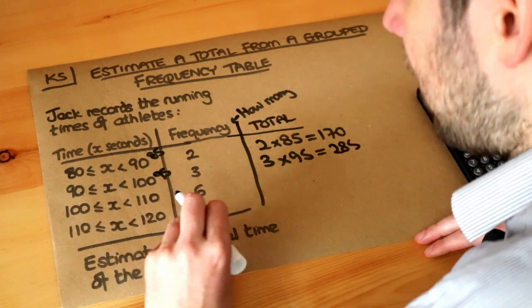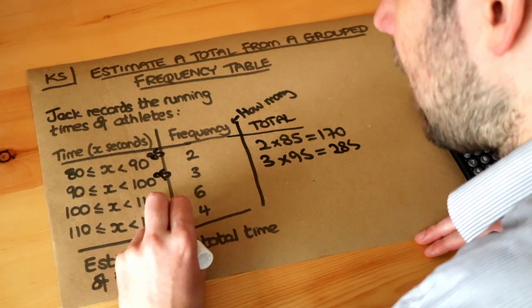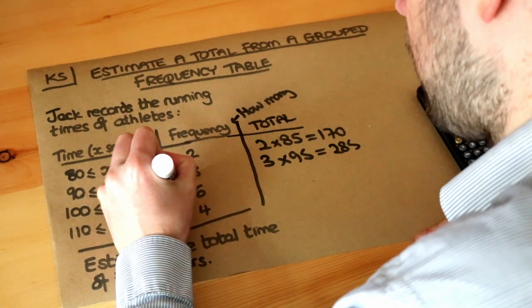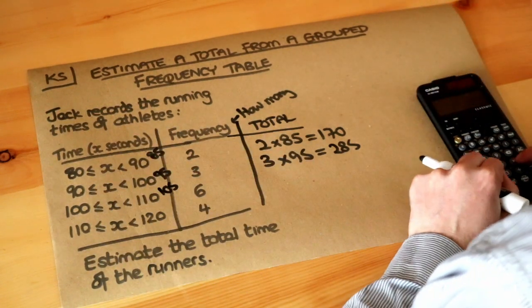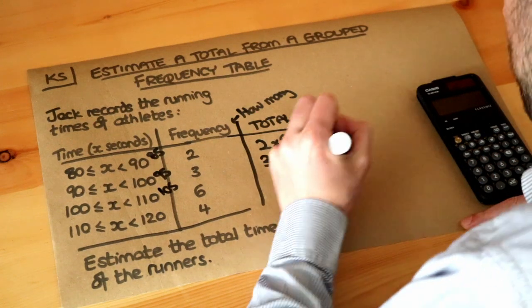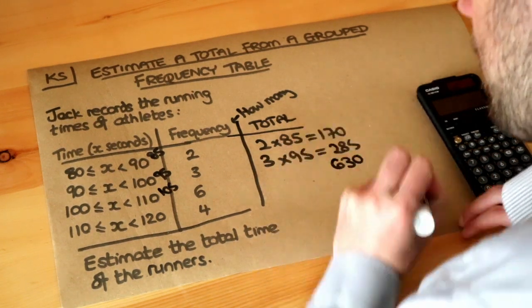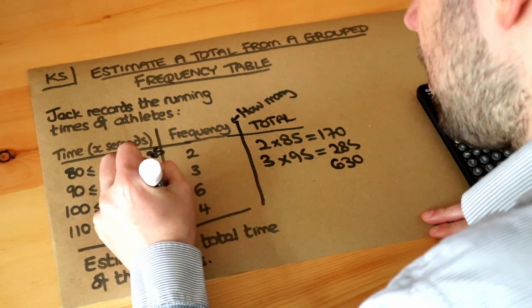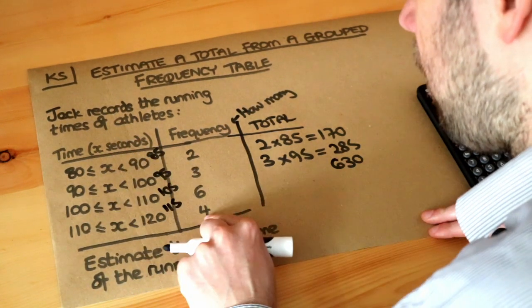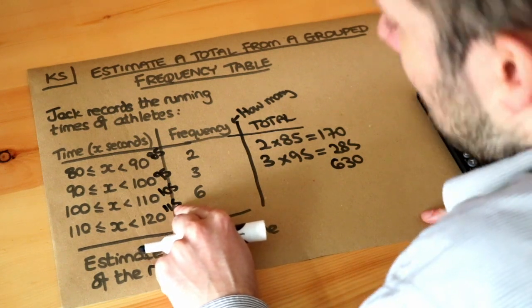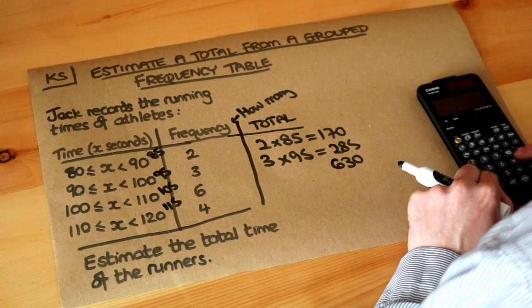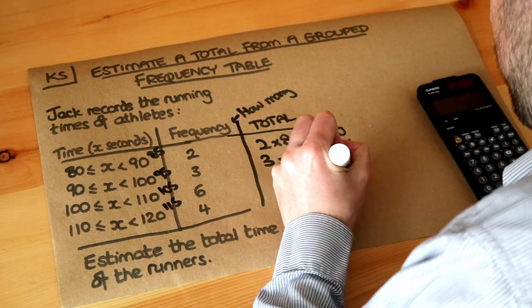And then we'll just repeat the same for the next few rows. 100 to 110, what's halfway between 100 and 110? Well, it's 105, so we just do 105 times 6. I'm not going to write the calculation this time, but we get 630. And then finally, what's halfway between 110 and 120? Well, it's 115. Four athletes got a time of 115 seconds. So we do 4 times 115, and we get 460.